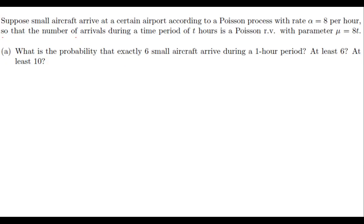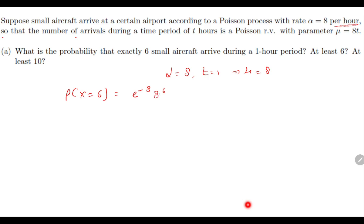Consider the question: small aircraft arrive at a certain airport at a rate of 8 per hour, so alpha = 8. The probability that exactly 6 arrive during a one-hour period — here t = 1, so mu = alpha × t = 8. It becomes a Poisson distribution and P(X = 6) = e^(−8) × 8^6 / 6!. Similarly, the probability of at least 6 is 1 − F(5) and at least 10 is 1 − F(9).